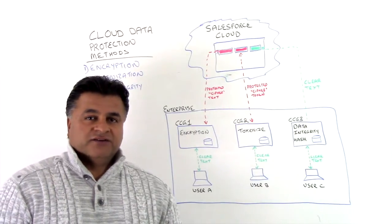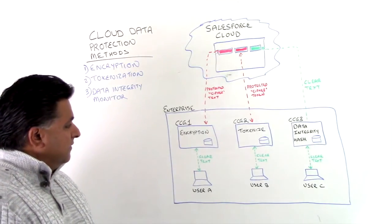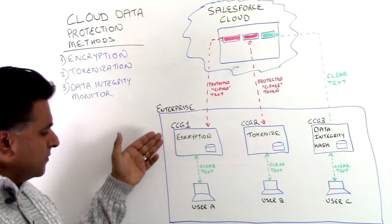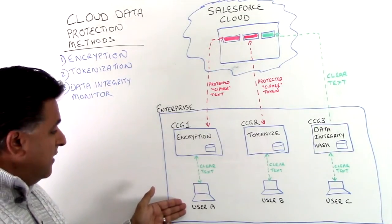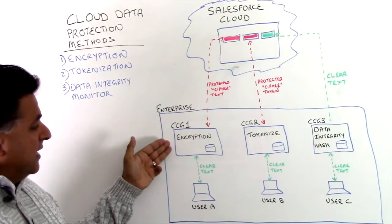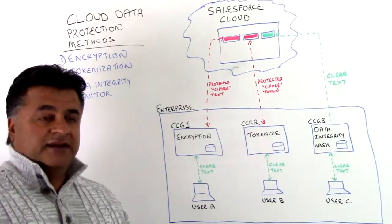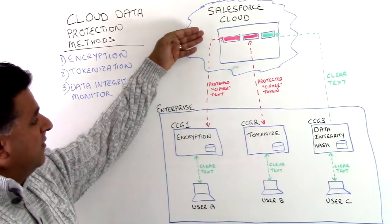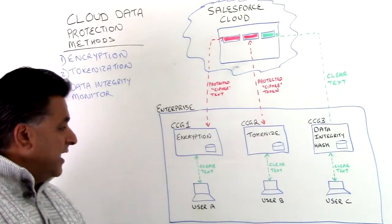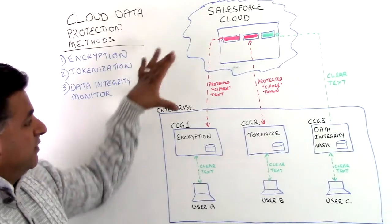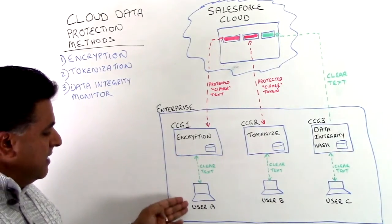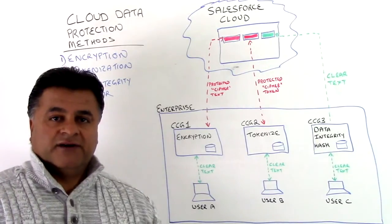Let's touch upon the first one, which is encryption. Here we have an example of an enterprise with one of our Cypher Cloud security gateways deployed in their infrastructure. User A is going to enter data into Salesforce. As they enter that data it goes through our Cypher Cloud gateway and becomes encrypted. What is put into the Salesforce Cloud is an encrypted version — what we call protected Cypher Text. As it comes back and they want to view it, we decrypt that information and send it in clear text back to user A.